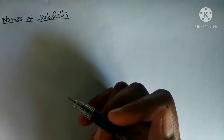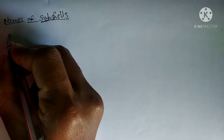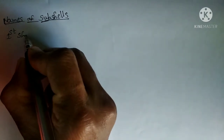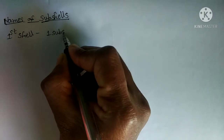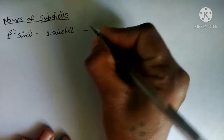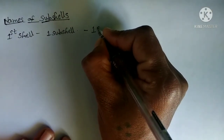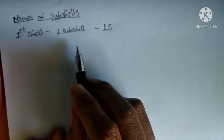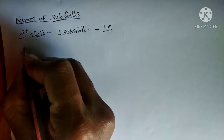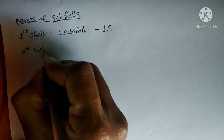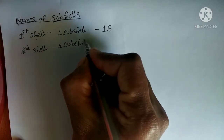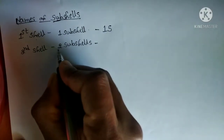In today's topic: what are the names of subshells? In the first shell we know that one subshell is present. What is the name of that subshell? Its name is 1s. Similarly, in the second shell how many subshells are present? Two subshells are present.